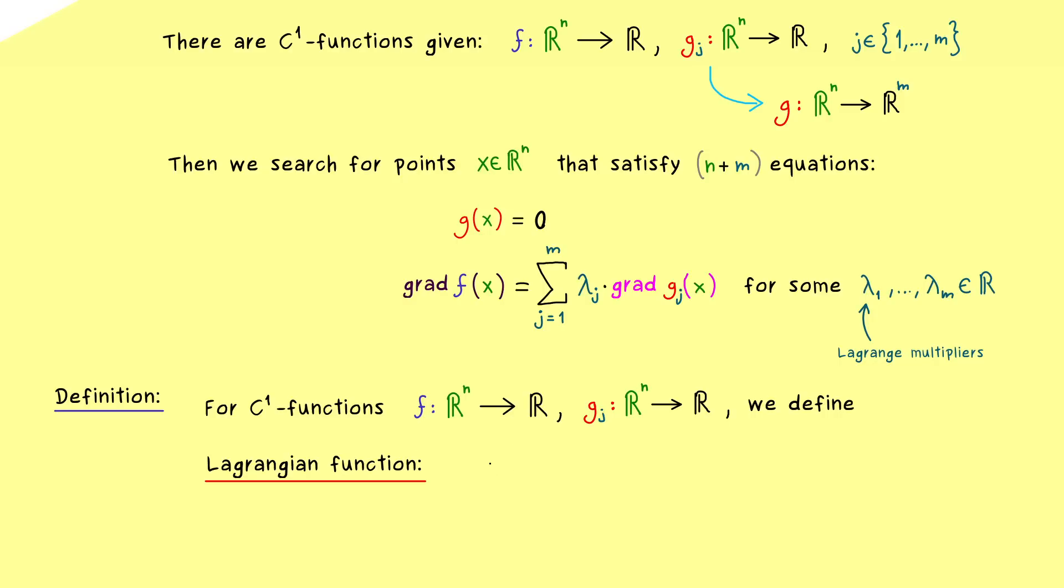And this new one is what we call the Lagrange function of our problem. And usually it is denoted by capital L or by capital lambda. And the most important thing to remember here is that it gets two inputs, namely a vector in Rn and a vector in Rm. But still, it should be a real valued function, so the codomain is given by R.